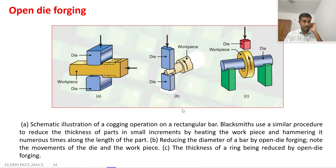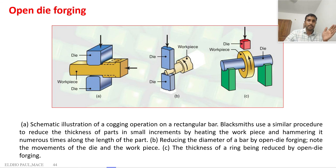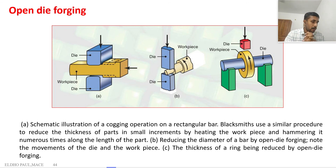Using different combinations of forging operations, we can make different components. The design of the forging operation sequence is very important — we cannot choose operations randomly, as there are specific rules for sequencing to produce a defect-free product. In the next class, we will discuss open die forging in detail and analyze it using slab analysis.